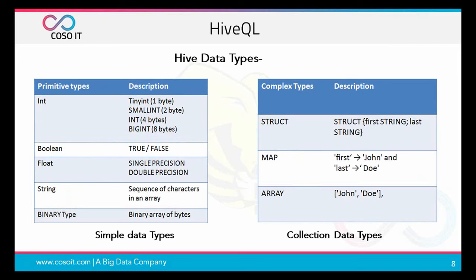HiveQL is quite similar to SQL, so if you have a good understanding of SQL, HiveQL is quite easy. It has simple data types such as int, boolean, float, string, and binary — it's different from SQL dialects in that it doesn't have a varchar type. It also has collection data types like struct, map, and array. For example, an address field can be defined as a struct because it has city, state, and zip code as subfields. A deduction field can be defined as a map, which holds a key-value pair where the key is the name of the deduction (say, federal taxes) and the value is the percentage value of the deduction.